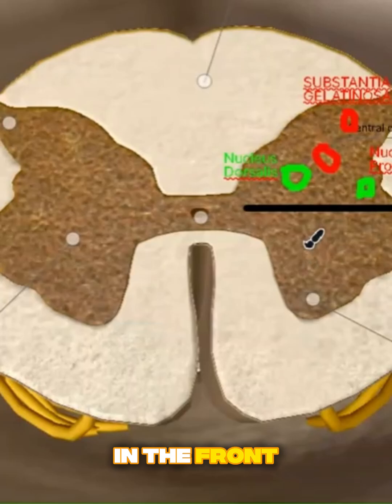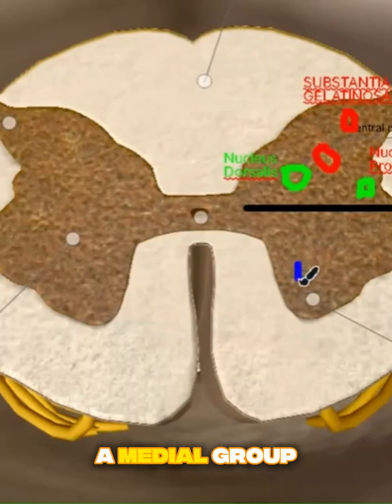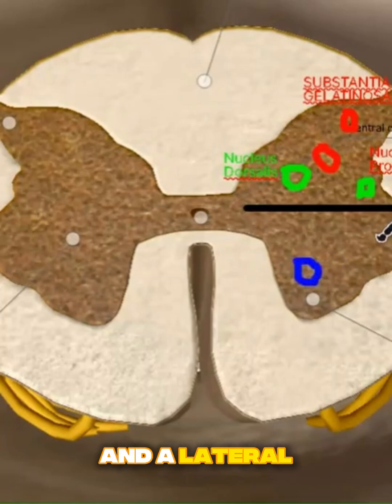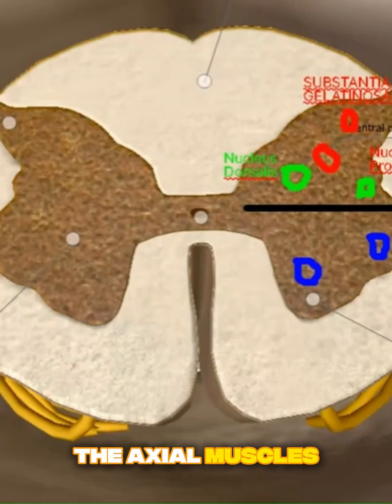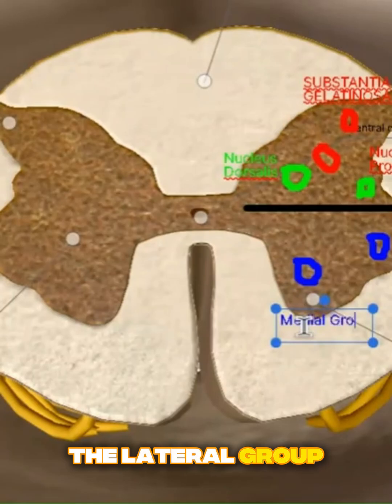Now the nucleus is in the front. And generally, throughout the length, you will have a medial group and a lateral group. The medial group will supply the axial muscles. The axial muscles mean the ones on your neck, your thorax, your abdomen, the muscles in the center.